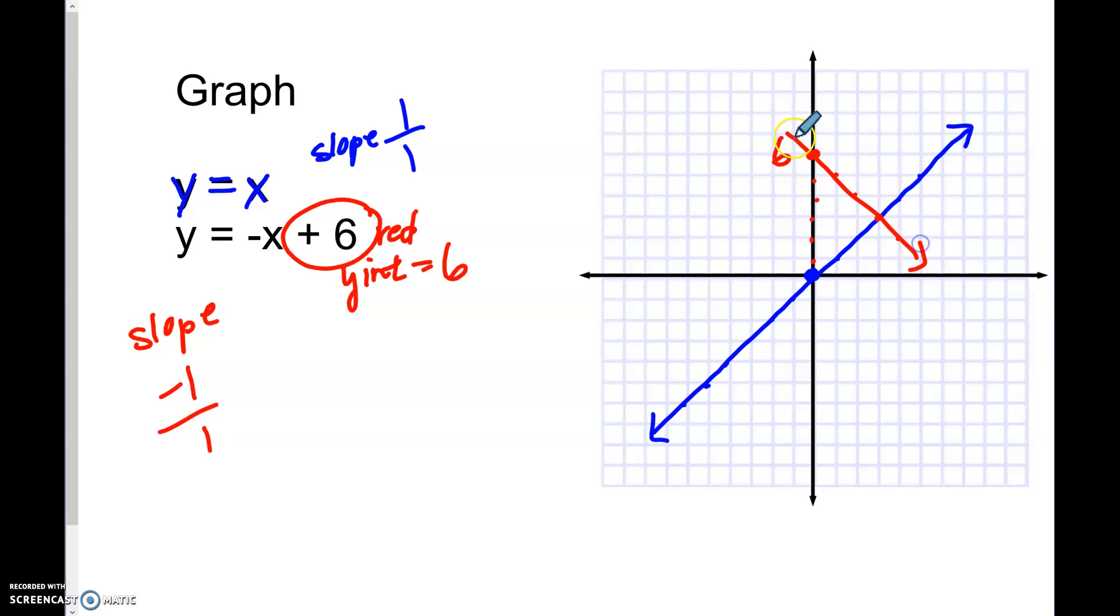Now what is the solution? Make sure you write this final answer. It's over 1, 2, 3 and up 1, 2, 3. So our answer is (3, 3). These two lines are meeting at the point (3, 3). There is one solution here and that one solution is the ordered pair (3, 3).